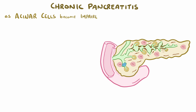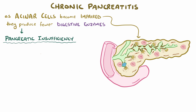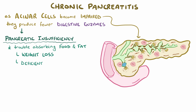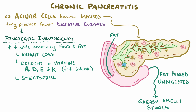As the acinar cells become impaired, they produce fewer pancreatic digestive enzymes, resulting in pancreatic insufficiency. These individuals can have trouble absorbing foods and dietary fats, often lose weight, and may even develop a deficiency in fat-soluble vitamins A, D, E, and K. Without digestive enzymes, fat might pass right through the intestines undigested, leading to greasy and smelly stools called steatorrhea.